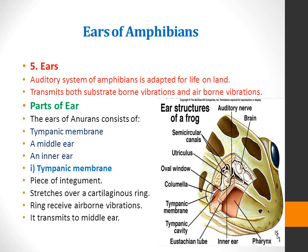The ears of anurans consist of three components: a tympanic membrane, a middle ear, and an inner ear. There is no external ear pinna as seen in other vertebrates.